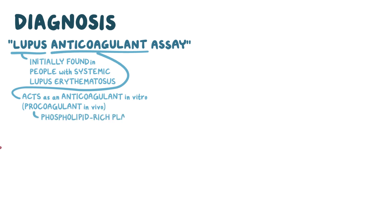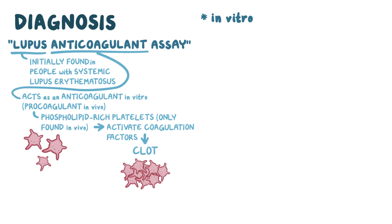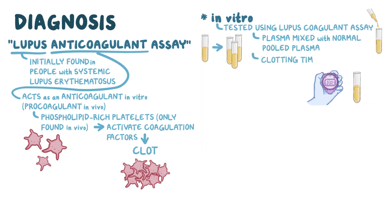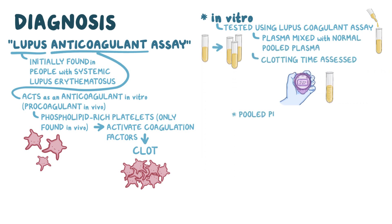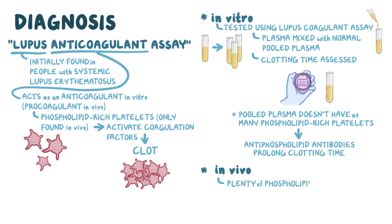This is because phospholipid-rich platelets, which are only found in vivo, are needed to activate coagulation factors and cause a clot. In vitro, tested using the lupus anticoagulant assay, the individual's plasma is mixed with normal pooled plasma and clotting time is assessed. The pooled plasma doesn't have many phospholipid-rich platelets, so individuals with antiphospholipid antibodies end up prolonging the clotting time. In vivo, there are plenty of phospholipid-rich platelets around, so the effect is excessive clotting.